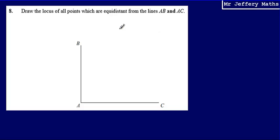Now, in order to draw the locus of all points which are equidistant from two straight lines, I need to draw an angle bisector of the angle at which the two straight lines meet.